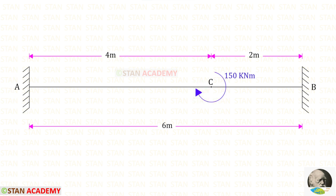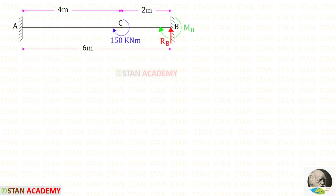In the previous videos we converted fixed beams into simply supported beams, but in this problem there is a concentrated moment, so if we proceed in that way it will be a little difficult. In this case we can try a different method. We are going to draw the bending moment diagram separately about the point A — first due to the vertical reaction Rb, then due to the moment Mb, and finally due to the concentrated moment 150.